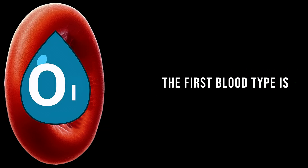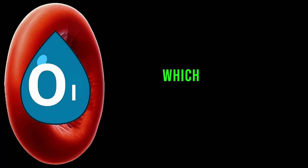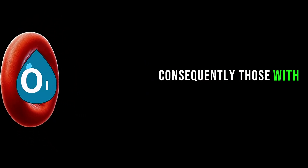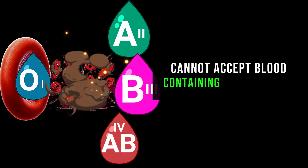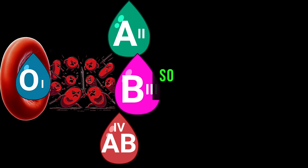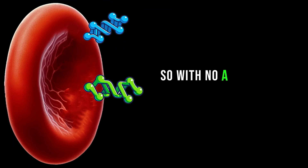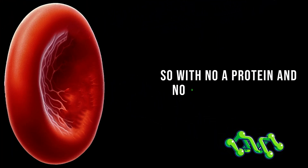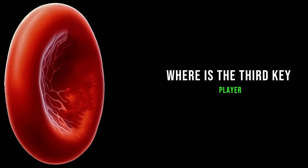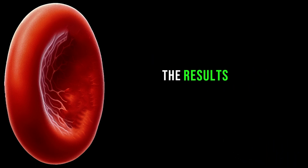The first blood type is O, which means the blood has no A and no B proteins. Consequently, those with type O blood cannot accept blood containing either A or B proteins. With no A protein and no B protein present, where is the third key player — the Rhesus protein?